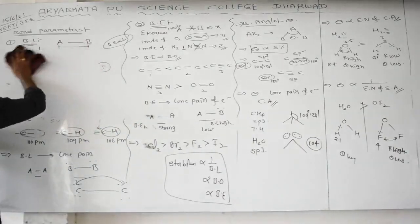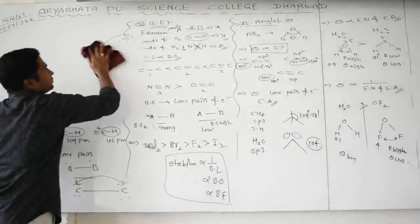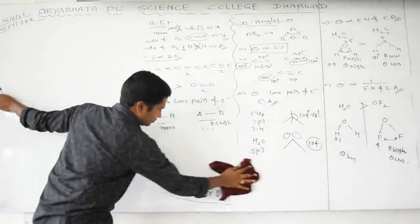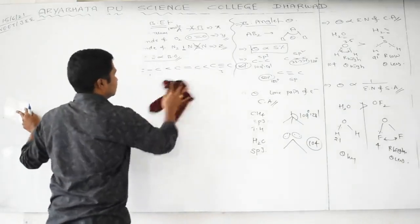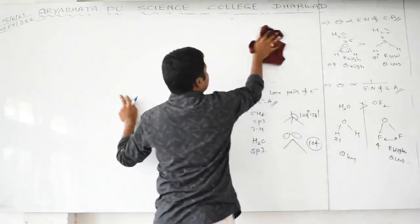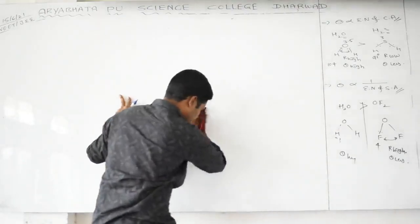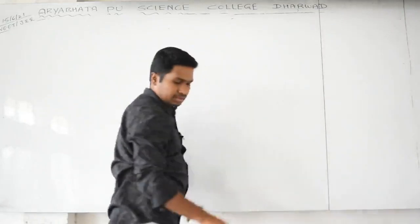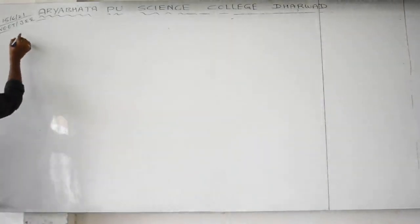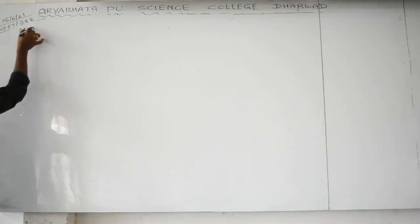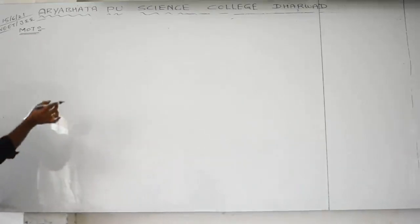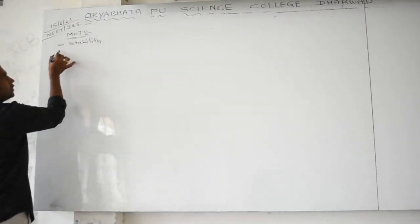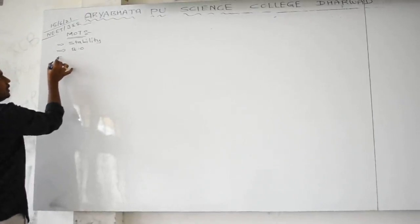The last concept is Molecular Orbital Theory (MOT). Most competitive exam questions are asked from MOT. The main concept of molecular orbital theory is that it explains the stability of a molecule, bond order, and magnetic nature.